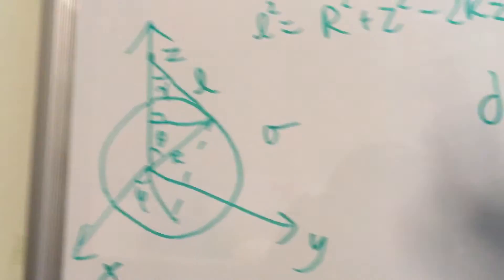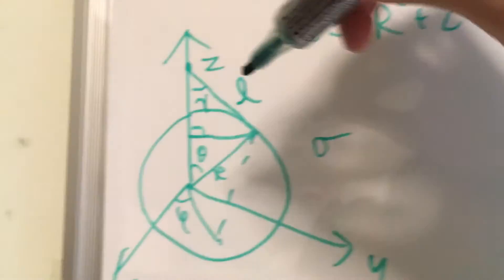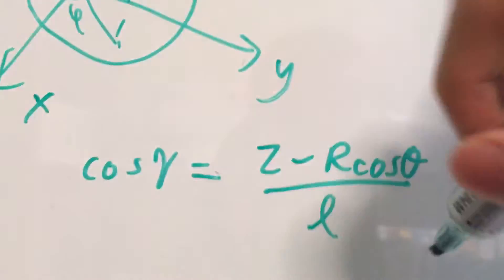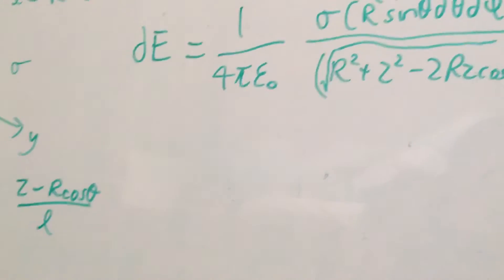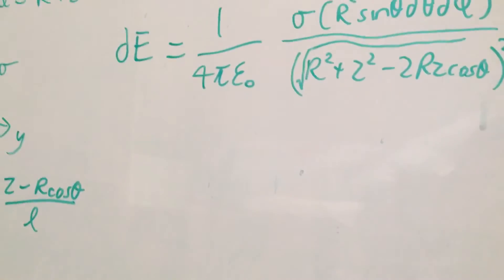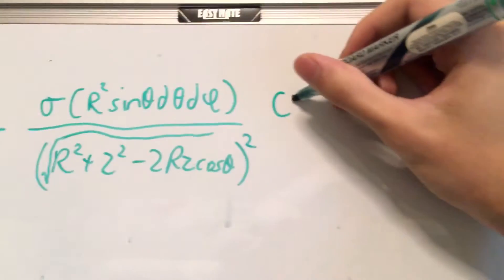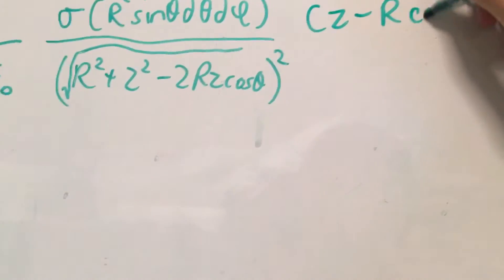And since the field we're looking for is pointing in this direction, we'll have to multiply this entire thing by the cosine of gamma, which is this. So I'll just multiply this into this. So we'll have to add this: z minus r cosine of theta divided by L.